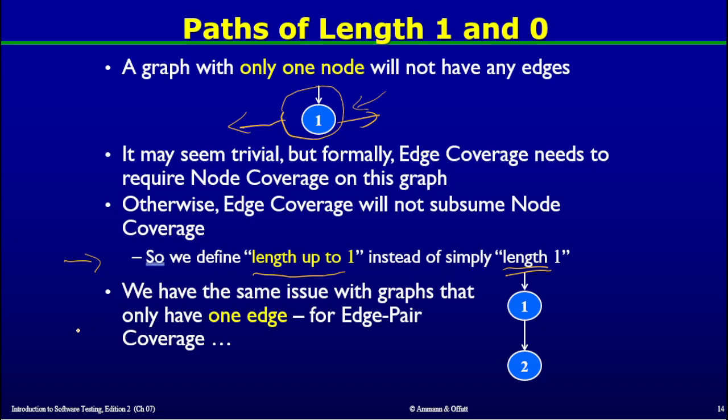This also holds for edge pair coverage. In that case, if we have a graph with just one edge, that is not going to ensure that edge pair coverage subsumes edge coverage unless we include the phrase 'length up to two'. These are two special constructions showing how edge coverage subsumes node coverage on graphs having just one node, and how edge pair coverage subsumes edge coverage on graphs having just one edge.